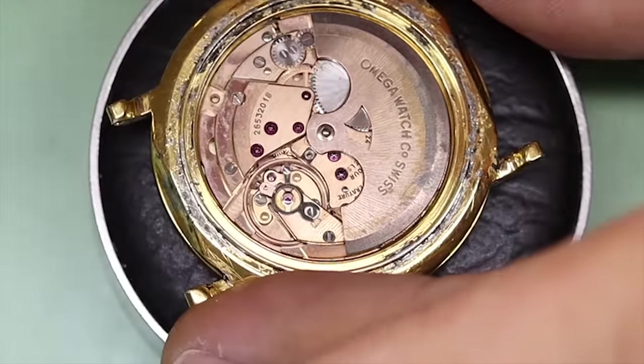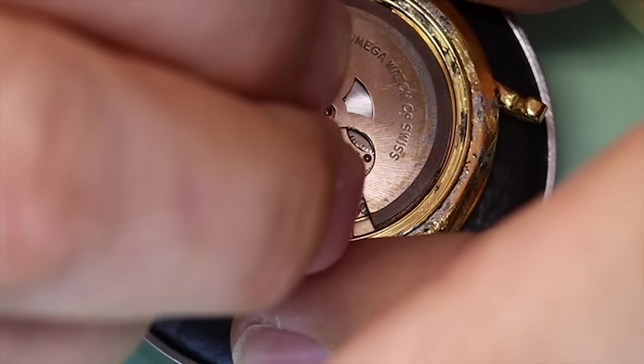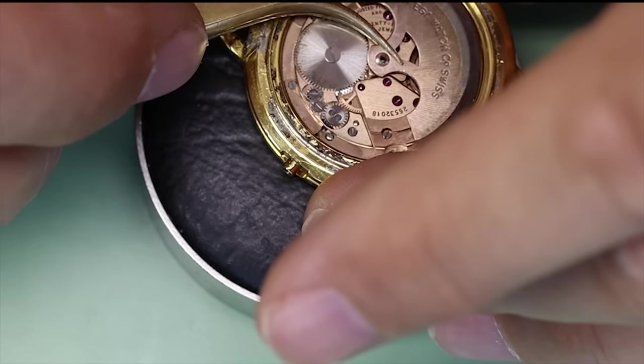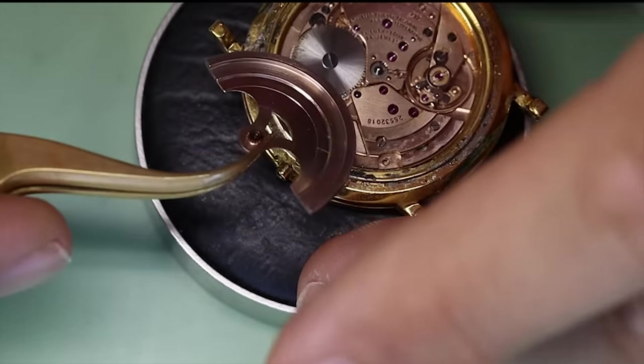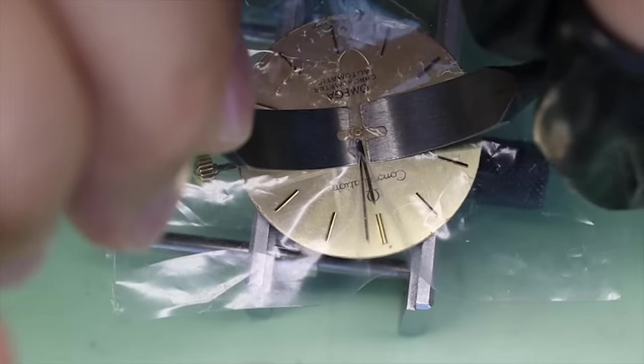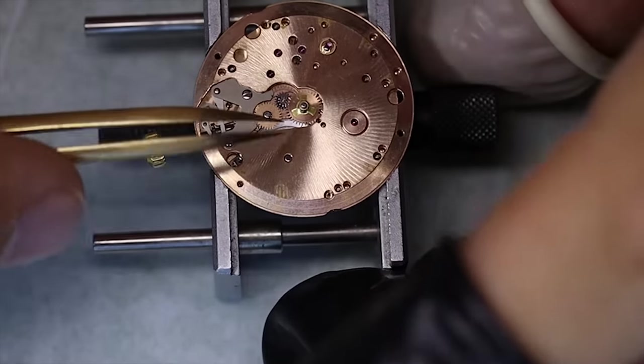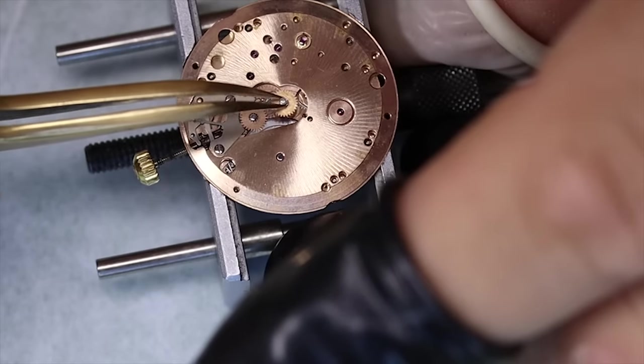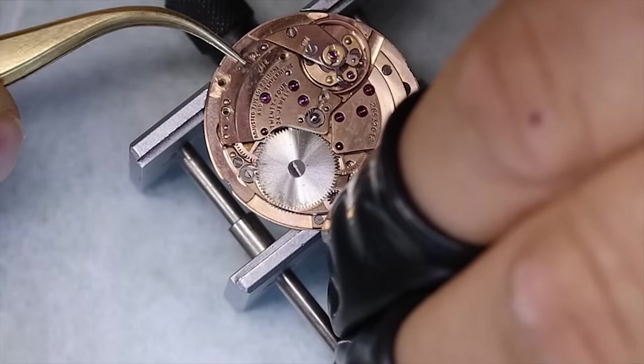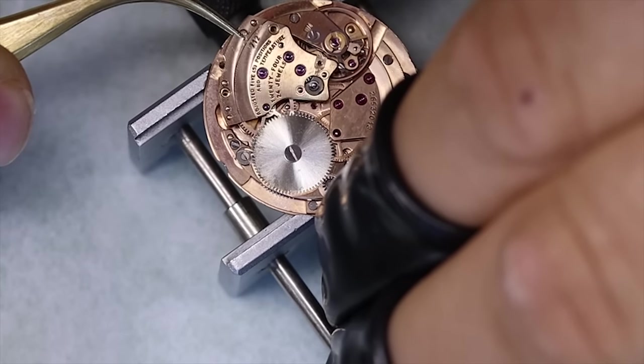So let's uncase the movement. We have to take the bezel off to get the movement out. Now this is caliber 712. There were three different automatics in the 700 series of which the 712 is the chronometer rated one. I'm actually not entirely truthful because there were also three other variants but they were only in very limited editions in 1984.